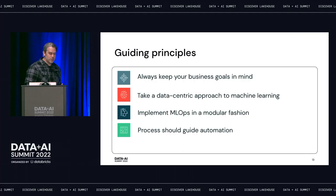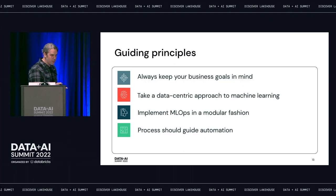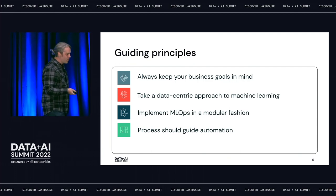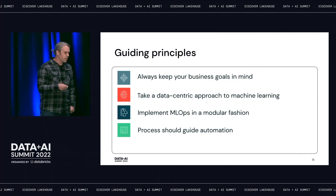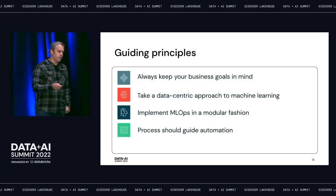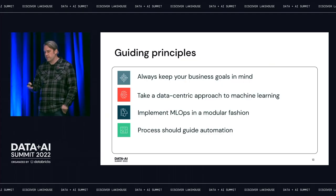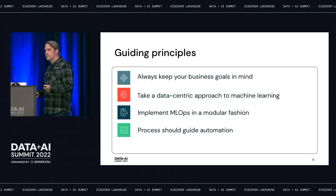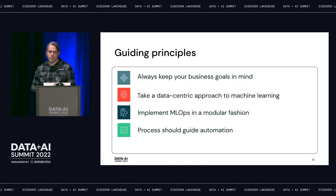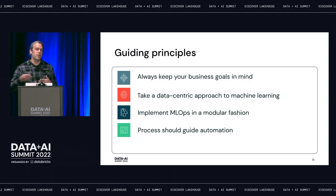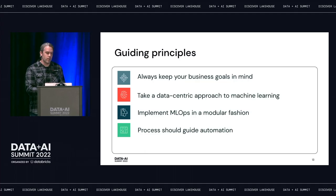The fourth principle: the process you define should guide how you choose to automate things. It's tempting to automate just for the sake of automation, but with machine learning it's important to automate the steps of your process as needed. There may be times where you want to include a human in the loop and avoid automation, and times where you want to facilitate a rapid handoff between personas — that's a good place to introduce automation.